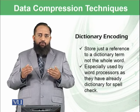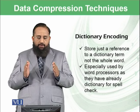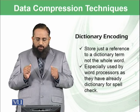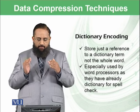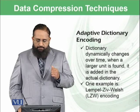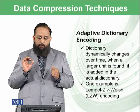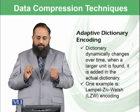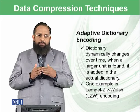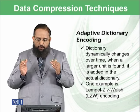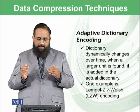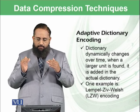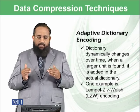There is another approach called dictionary encoding — store just a reference to a dictionary term, not the whole word. It is especially used by word processors as they already have a dictionary for spellcheck. Such an approach is also known as adaptive dictionary encoding, in which the dictionary dynamically changes over time. When a large unit is found, it is added to the actual dictionary. One example is Lempel-Ziv-Welch (LZW) encoding.